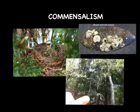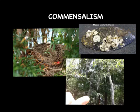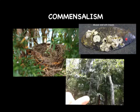The second type of symbiotic relationship is commensalism. In a commensal relationship, one species benefits while the other neither benefits nor is harmed. Examples include a bird building a nest in a tree — the bird gets a home, but the tree is unaffected. Spanish moss growing in a tree gets a place to grow but does not harm or benefit the tree. A barnacle growing on a mussel gets a place to attach, while the mussel is neither harmed nor benefited.